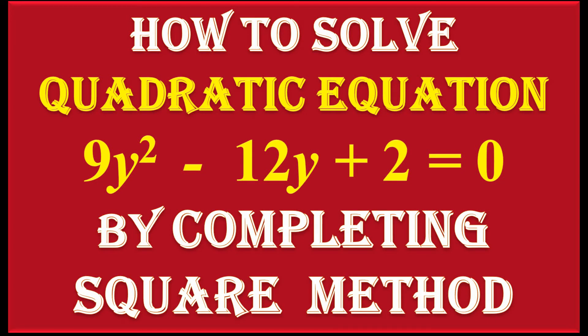Friends, now we have to solve quadratic equation 9y² - 12y + 2 = 0 by completing the square method.